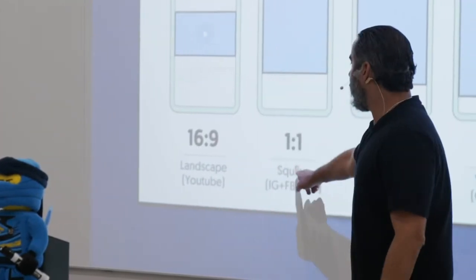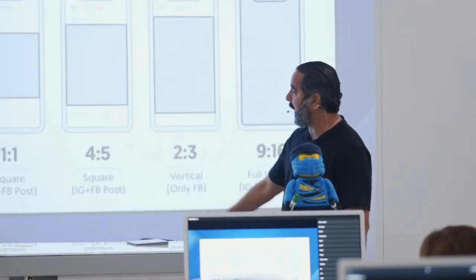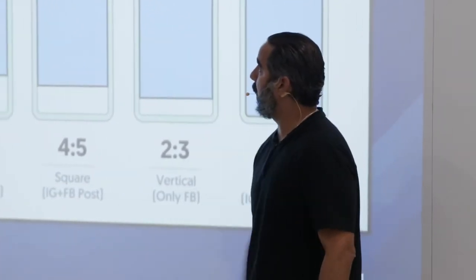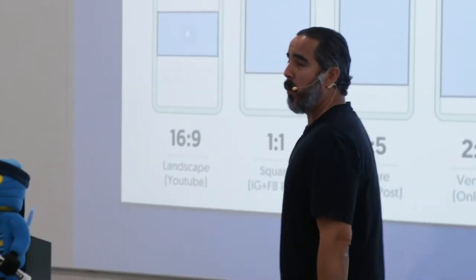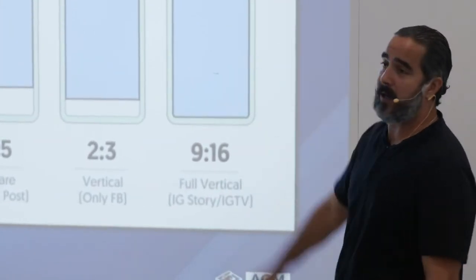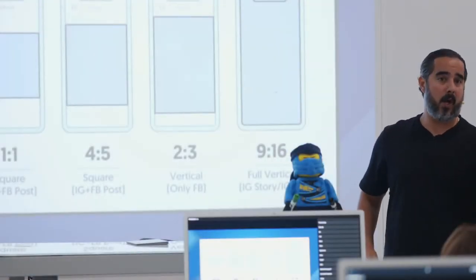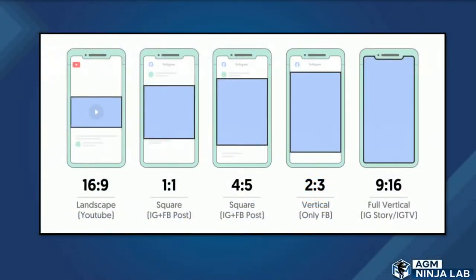So 16:9 is landscape on YouTube. 1:1 ratio is a square video you can use on Instagram and Facebook. There's also a slightly wider square format for Instagram and Facebook. 2:3 is vertical only for Facebook. And then there's a full vertical — 9:16 — which is basically the opposite of 16:9. TikTok videos, Instagram Reels — all these full verticals — all you've got to do is put it into software and adjust from 16:9 to 9:16. Now you have content you can distribute across other platforms. You don't have to record for every single platform — you multiply the content you already have, get massive distribution, and open the door to get more attention so you can sell more of your products and services.